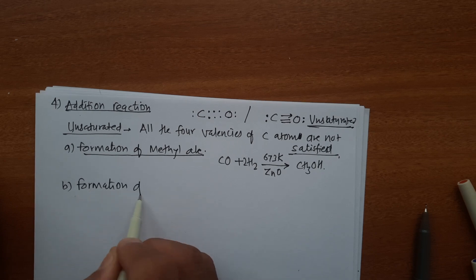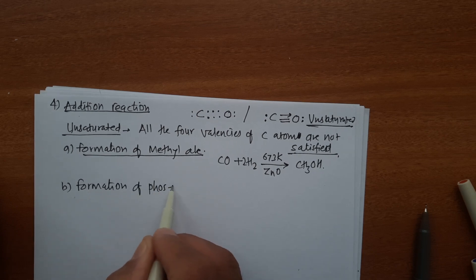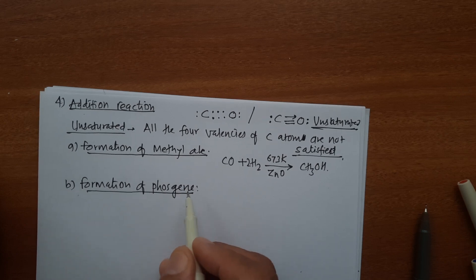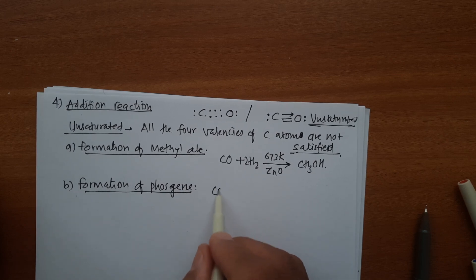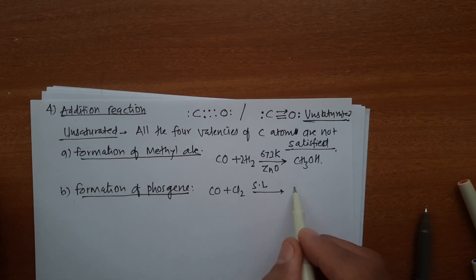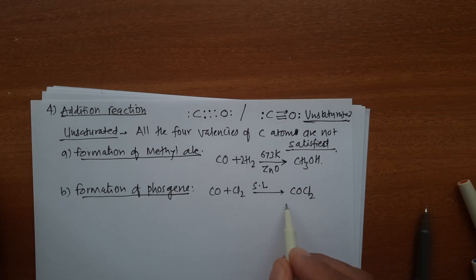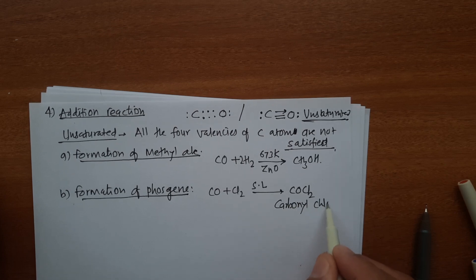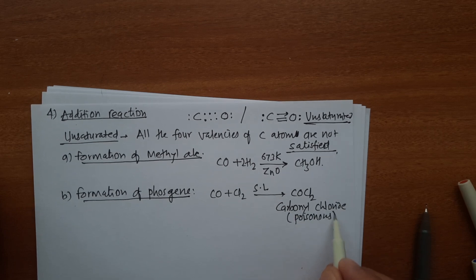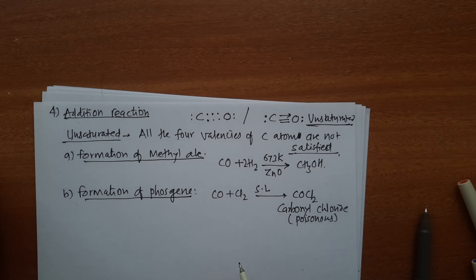Next: formation of phosgene, also called carbonyl chloride — it is a very poisonous compound. CO reacts with Cl₂ in presence of sunlight in a very fast reaction to form COCl₂ — this carbonyl chloride is called phosgene and it is very toxic in nature.